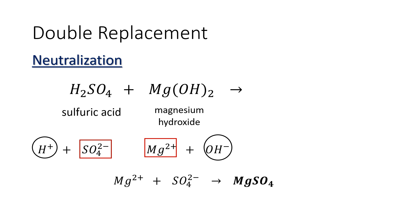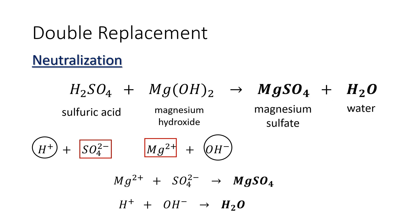Magnesium sulfate will be the salt in our product, and hydrogen and hydroxide will form H₂O, or water. So for the reaction between sulfuric acid and magnesium hydroxide, the products will be magnesium sulfate, which is our salt, and H₂O as our water.